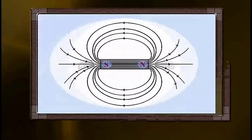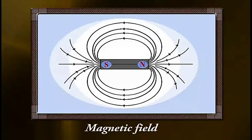Around every magnet, there is a space in which the force of attraction or repulsion due to the magnet can be detected. This space is called the Magnetic Field.